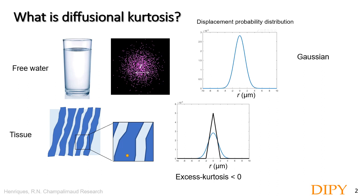In statistics, deviation from the Gaussian distribution can be quantified by the excess kurtosis. This quantity will be different from zero for non-Gaussian distributions. For example, in the case of confinement diffusion, the displacement distribution functions show sharper tails than the Gaussian distribution, and this is quantified by a negative excess kurtosis.